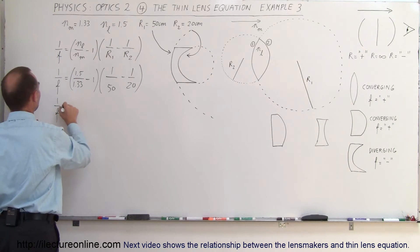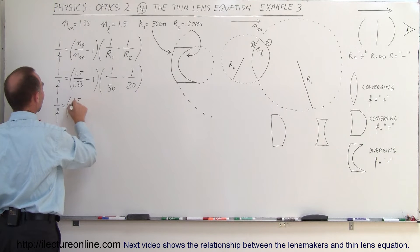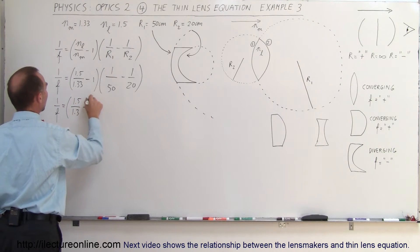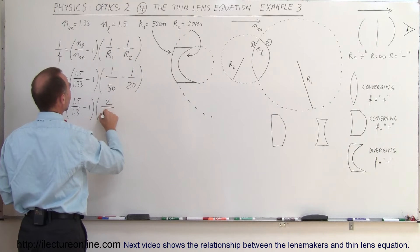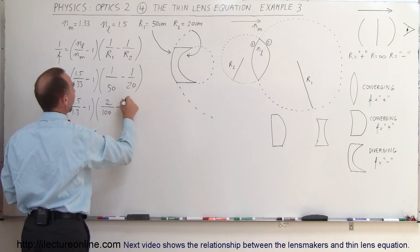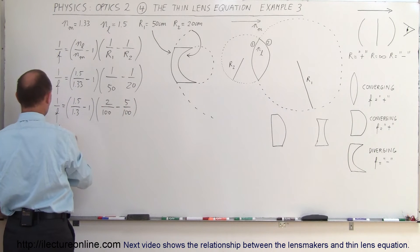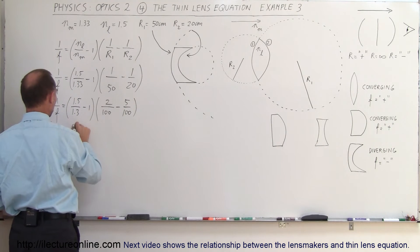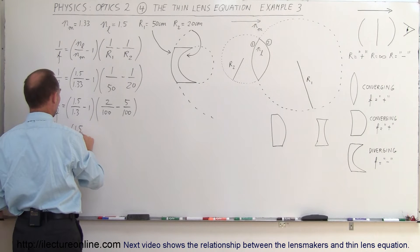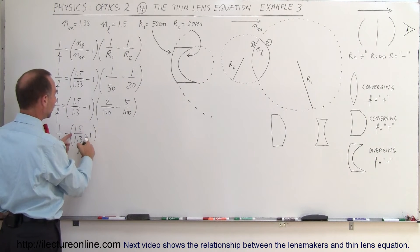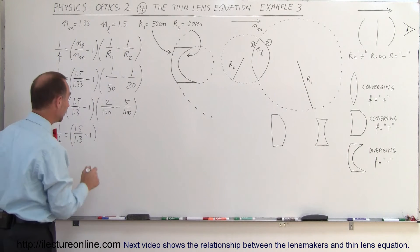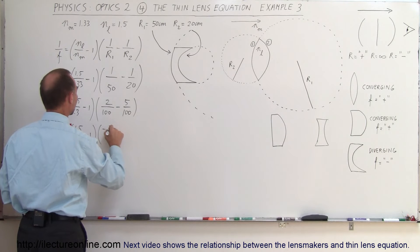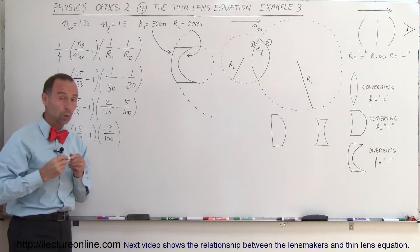So 1 over F is equal to 1.5 divided by 1.3 minus 1 times, the common denominator here is 100 so it would be 2 over 100 minus 5 over 100. So 1 over the focal length is equal to 1.5 divided by 1.3 minus 1. Notice that this is going to be greater than 0 because 1.5 divided by 1.3 is greater than 1 times, 2 minus 5 that's minus 3 over 100. There's the negative sign that will cause the whole thing to be negative.